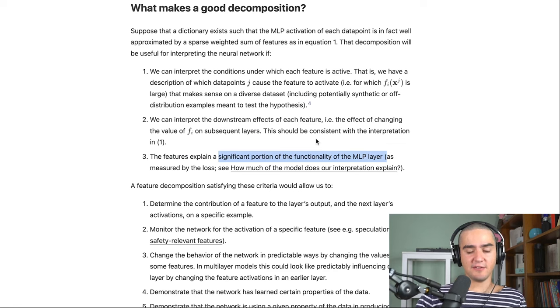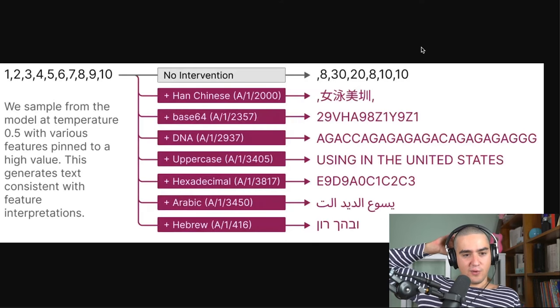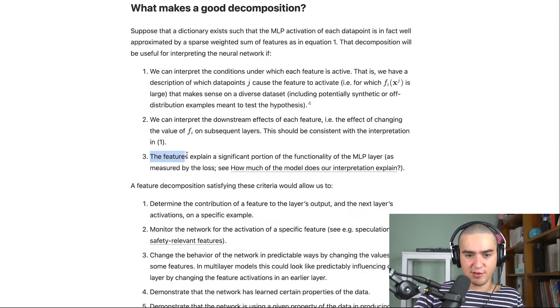And I think they kind of nail most of these points. So the first one we talked about and for the downstream effects, they have another test they made where they have a sequence of digits and they manually add the feature that corresponds to some stuff. So like Chinese, basically for DNA, et cetera, and they get to change exactly how they want the output. So it really means that this feature has some causal effects if you add them to your residual stream and then to explain a portion of your MLP layer.